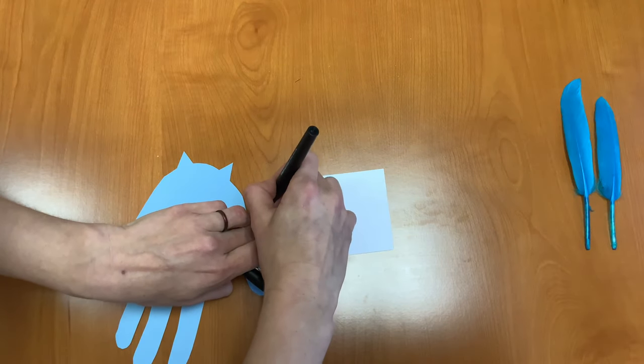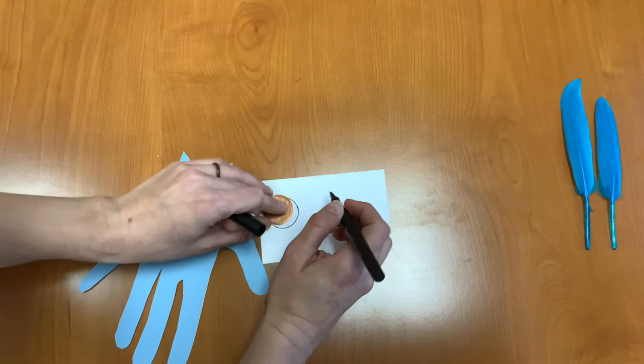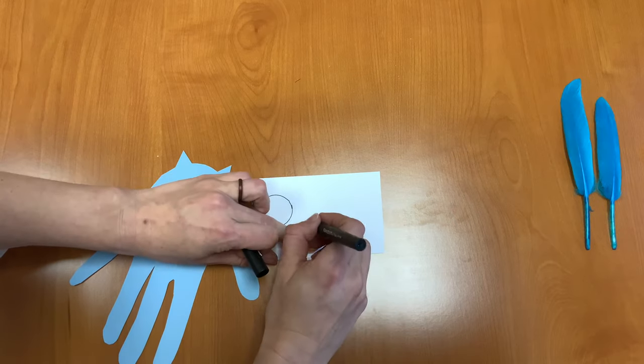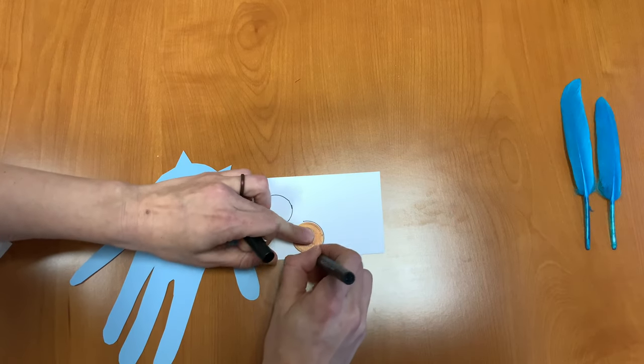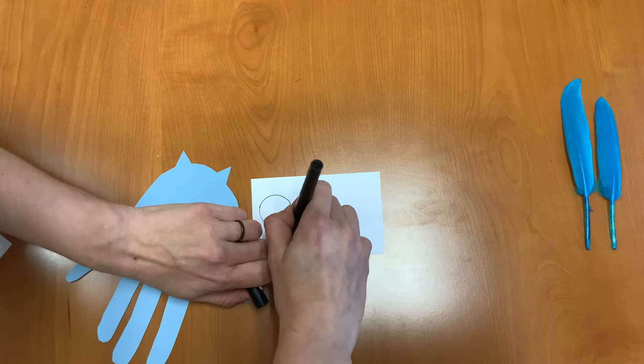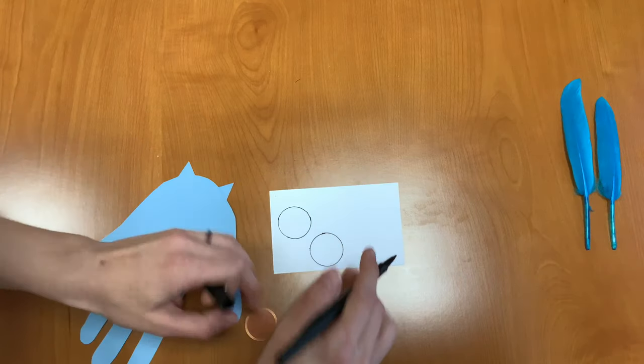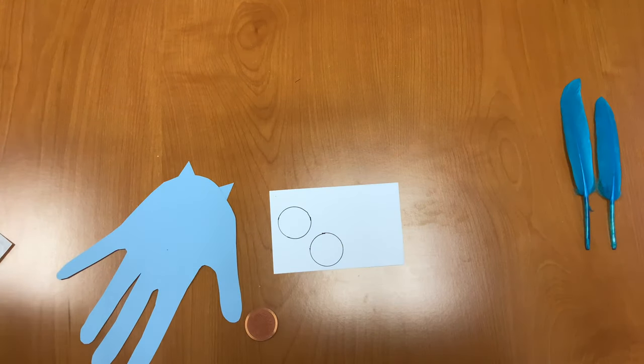Now you don't have to trace them. You can just cut circles if you want to. But I like to trace so I get nice perfect circles. Alright, I'm going to cut these out and I'll be right back.